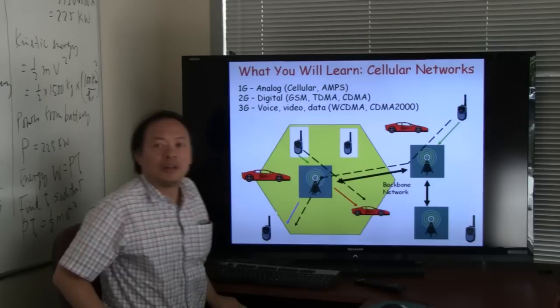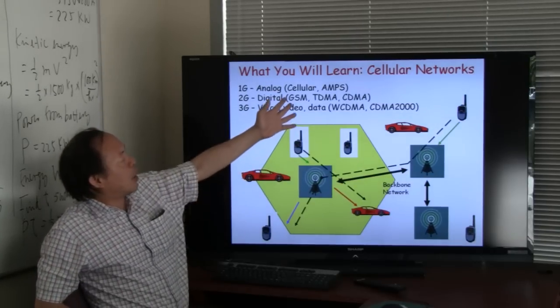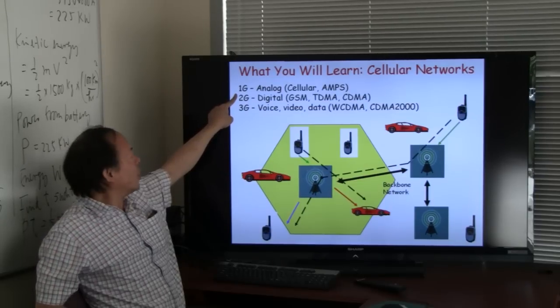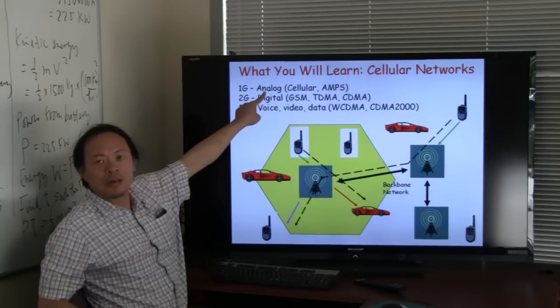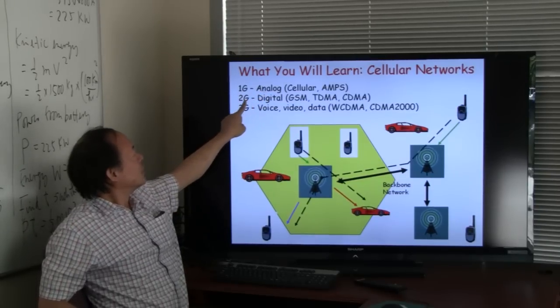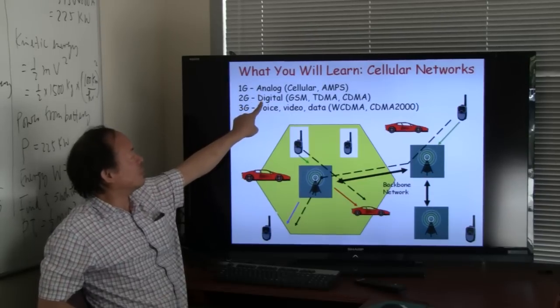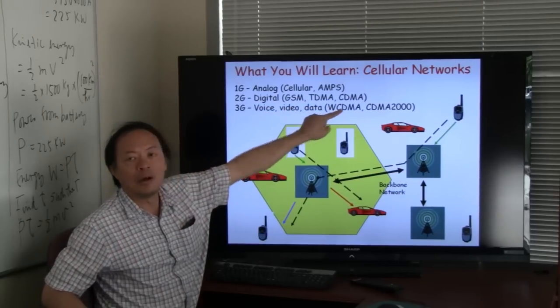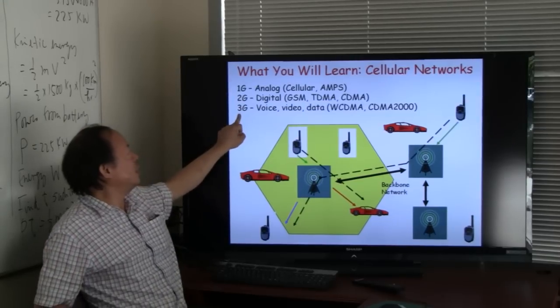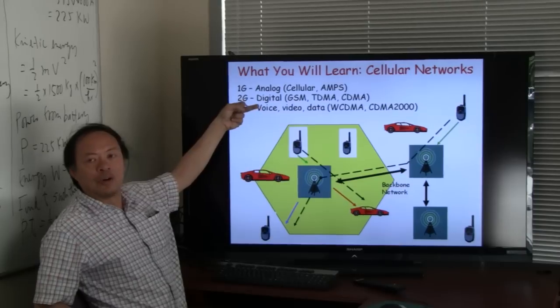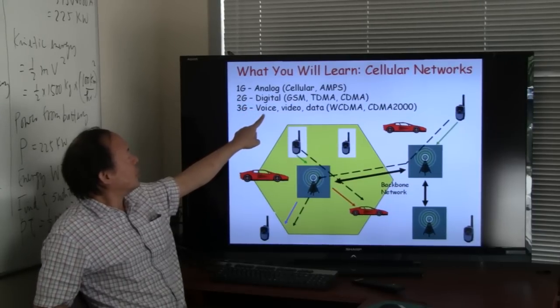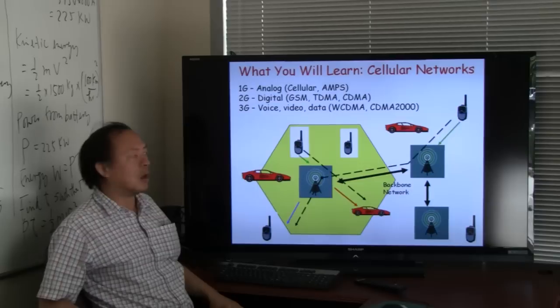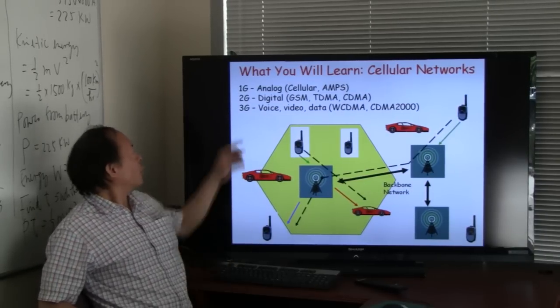The last subject that we're going to cover is in the very broad area of cellular network. And, we're going to start with looking at first 1G network, which is an analog cellular phone system. 2G network whereby we move from analog to digital format in communication systems such as GSM, TDMA, or CDMA. I'm going to move on to talk about 3G systems that allow not only analog or digital voice to be transmitted, but also video as well as data. So, we're going to talk about, in the third part, quite extensively about the various 1G, 2G, and 3G cellular communication systems.